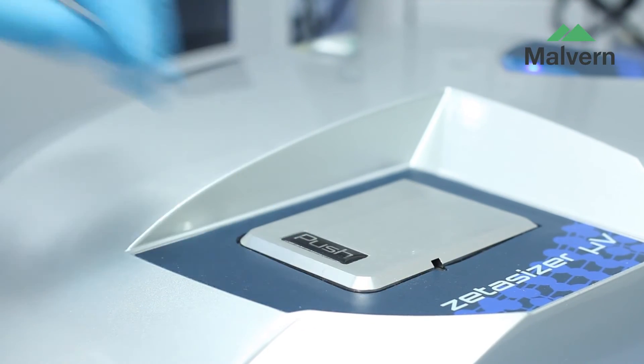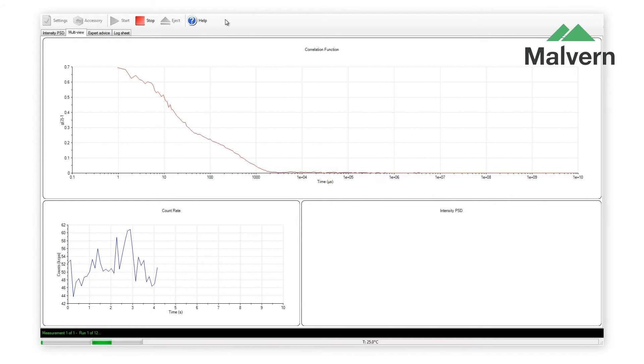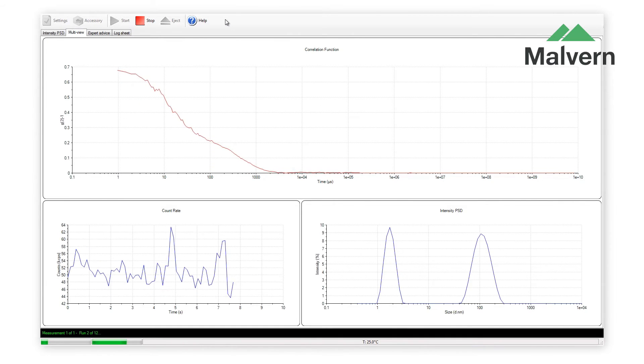If the aggregation needs to be explored in more detail, thermal trend measurements can be set up quickly and easily. The Zetasizer software reports the results clearly, offering quality advice and guidance to the user.